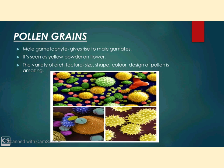Our next topic is pollen grain. It is the male gametophyte in angiospermic plants. Male gametophyte gives rise to male gametes. If we touch the open anthers of any flower, we find a deposition of yellow powder on our fingers — that is pollen grains. When we sprinkle this powder on a glass slide and observe under a microscope, we will be amazed by the variety of architecture — size, shape, color, and design of different pollen grains from different species of plants.